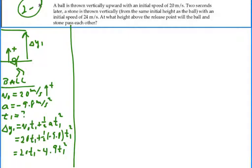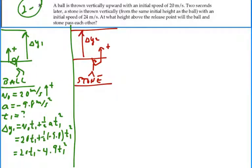Let's take a look at the stone. Stone is being thrown up in the positive direction, and it will go some kind of displacement called delta y2. And what we know about that is initial velocity is 24 meters per second. Acceleration, again, will be negative 9.8 meters per second squared because we define up as positive.